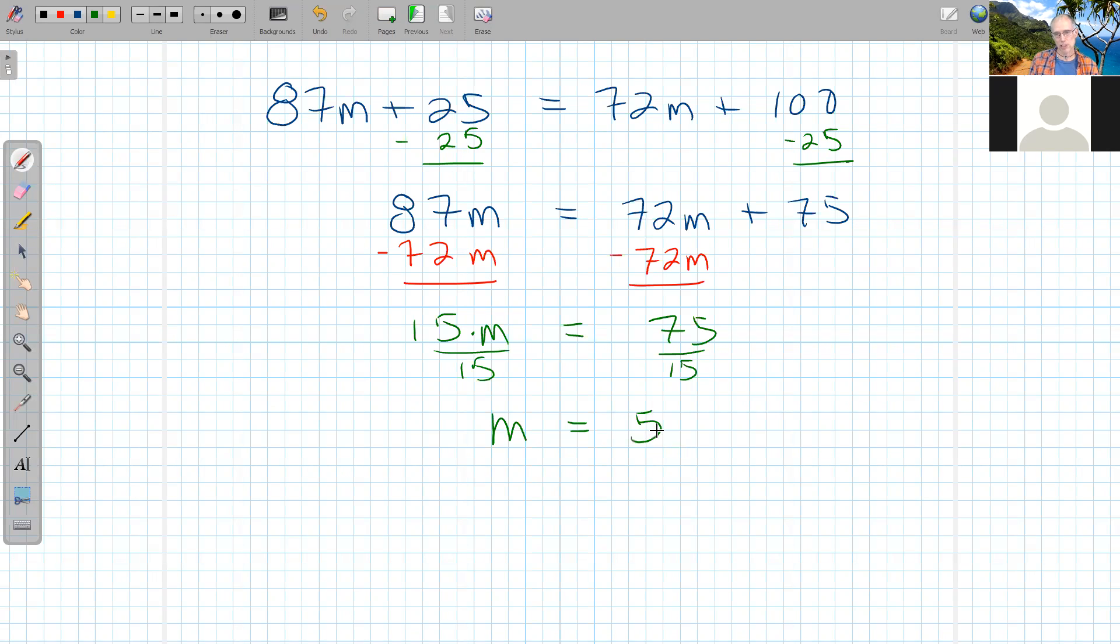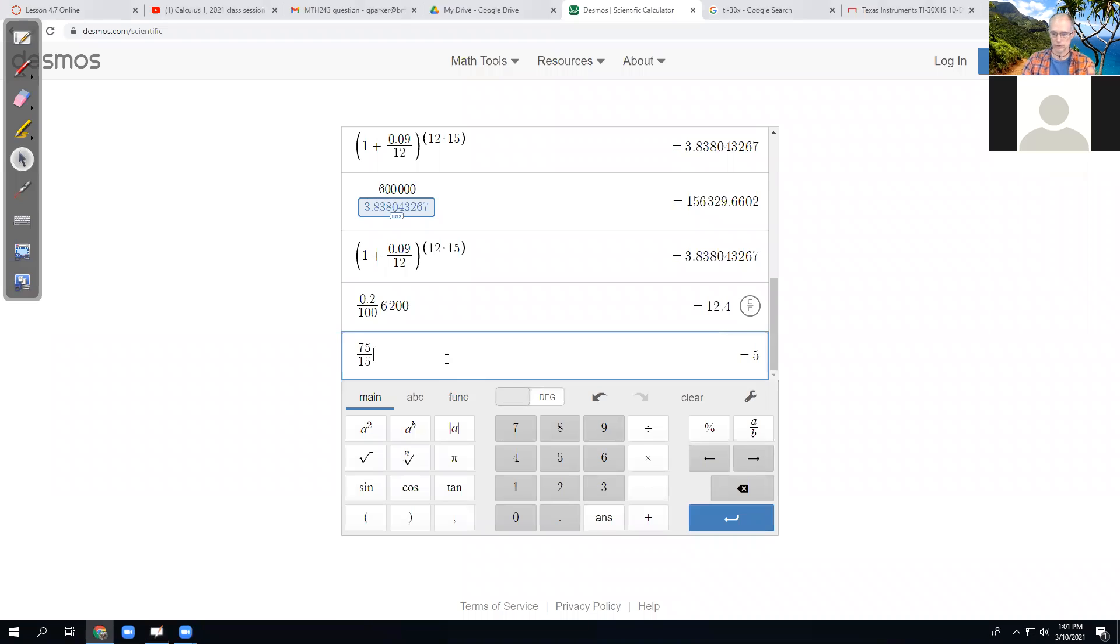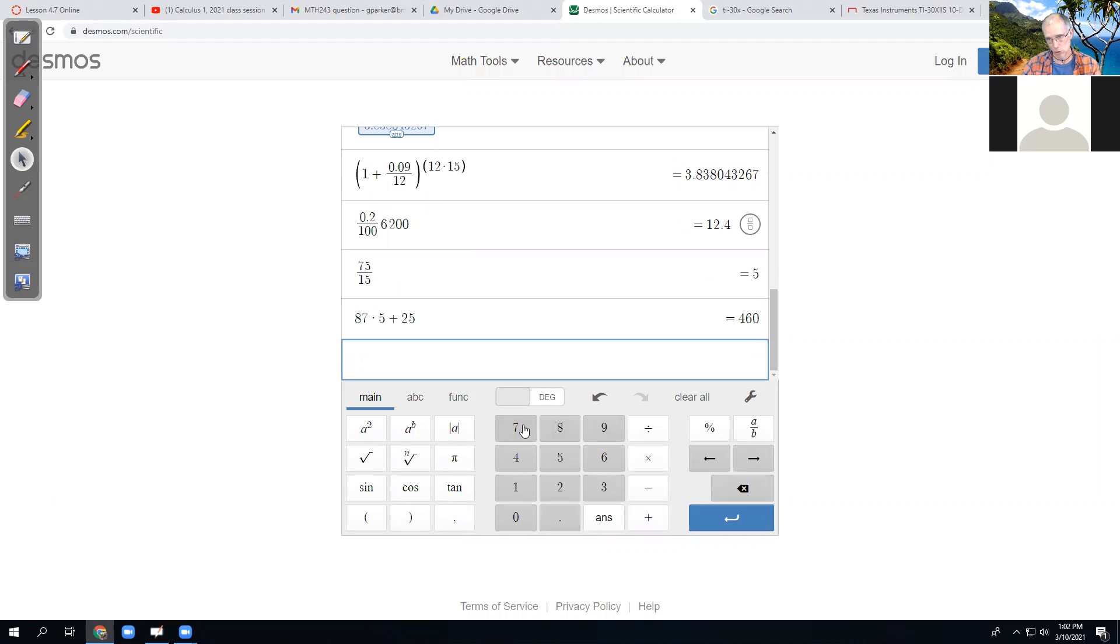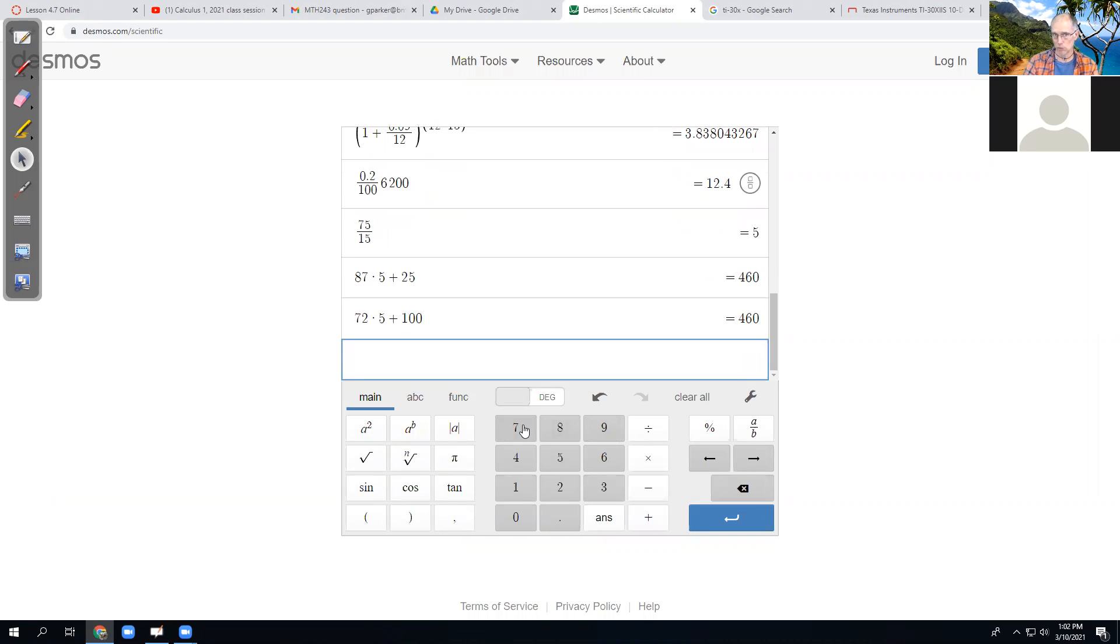It looks like in 5 months they'll be equal. Let me check by plugging in 5. What is 87 times 5 plus 25? Does that equal 72 times 5 plus 100? After 5 months, I'll have paid $460 at Harbor Square. And at the YMCA, 72 times 5 plus 100 is the same amount, $460.